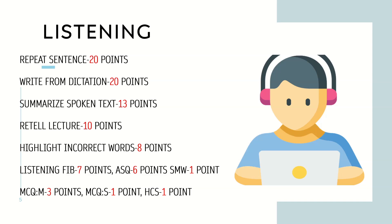Write from dictation is somewhat similar to repeat sentence. In repeat sentence you hear audio of 3 to 9 seconds and repeat it in the same sequence. In write from dictation you also hear 3 to 9 seconds but write it — you can change the sequence of words and even add two to three extra words. You get 20 points from write from dictation in the listening section.